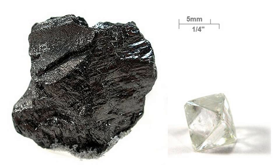The atoms of carbon can bond together in different ways, termed allotropes of carbon. The best known are graphite, diamond, and amorphous carbon. The physical properties of carbon vary widely with the allotropic form. For example, graphite is opaque and black while diamond is highly transparent.